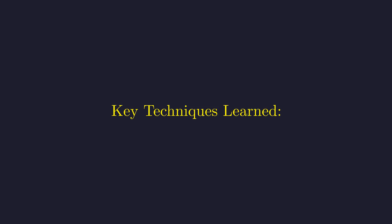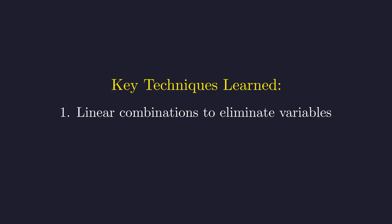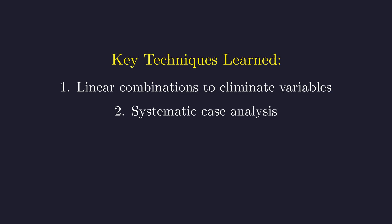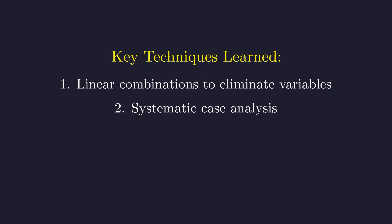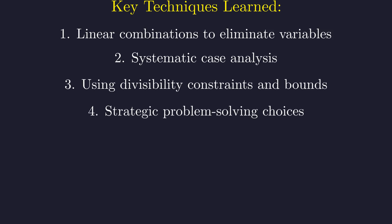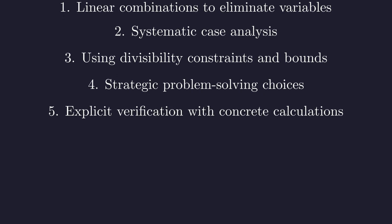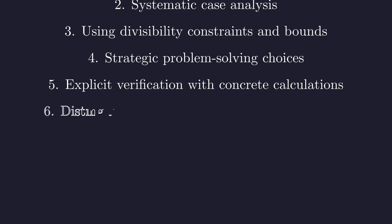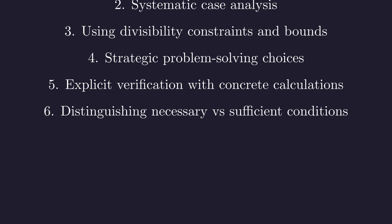This problem demonstrates several powerful techniques in number theory: first, using linear combinations to simplify divisibility conditions; second, a systematic case analysis based on the sign of a derived expression; third, the application of magnitude inequalities to bound variables; fourth, making strategic choices such as working with a simpler derived condition; fifth, performing explicit verification to confirm candidate solutions are sufficient; and sixth, maintaining a clear distinction between necessary and sufficient conditions throughout the argument. By transforming the initial condition into a simpler necessary one, we constrained the search space, and an exhaustive case analysis followed by direct verification allowed us to identify all solutions while proving that no others exist.